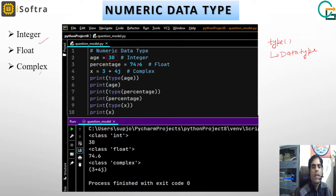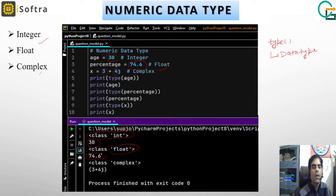Here percentage equals 74.4 — this is a fractional value, so it will be assigned the data type float. Similarly, x equals 3 plus 4j — this is complex, where 3 is the real part and 4 is the imaginary part. When we print type(age), it returns class int and its value is 30. Similarly, type(percentage) returns class float with value 74.4, and type(x) returns class complex with value 3+4j.